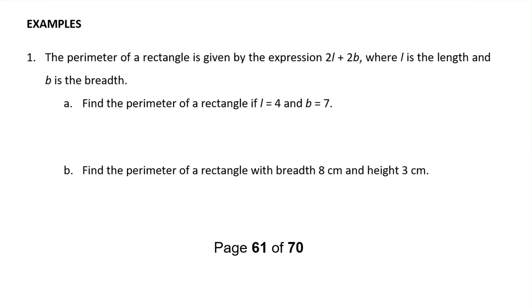Question number one: The perimeter of a rectangle is found with the expression 2L plus 2B, where L is the length and B is the breadth. Find the perimeter of the rectangle if L is equal to 4 and B is equal to 7. This is a substitution question. I'm going to substitute into this expression, replacing the L and the B with the numbers that I've been given.